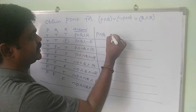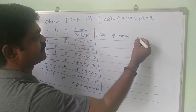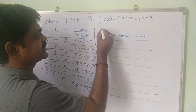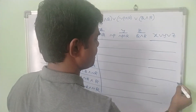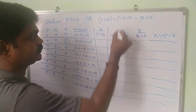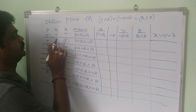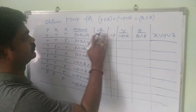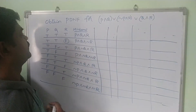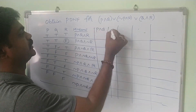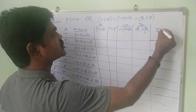Now compute each sub-formula. Let X = P∧Q, Y = ¬P∧R, Z = Q∧R, and the final formula is X∨Y∨Z. For P∧Q: it's true only when both P and Q are true — giving true for rows 1 and 2, false for the rest. Negation P is the opposite: false for rows 1–4, true for rows 5–8.